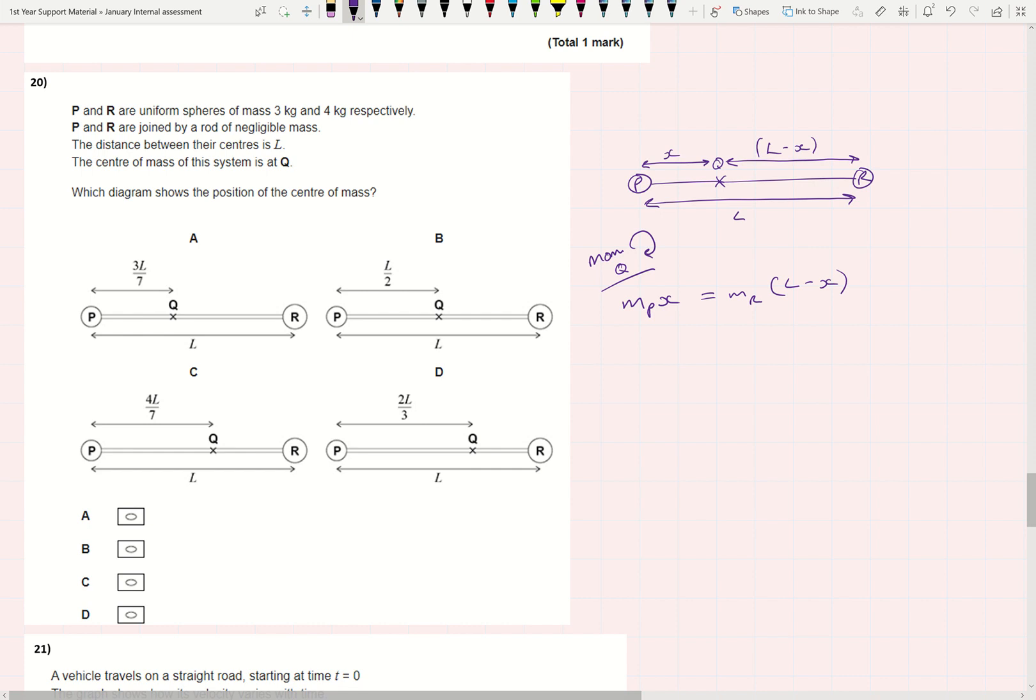I'm going to substitute and multiply out, so I've got the mass of P, which gives me 3X, and the mass of R, which is 4. I multiply that, which gives me 4L minus 4X.